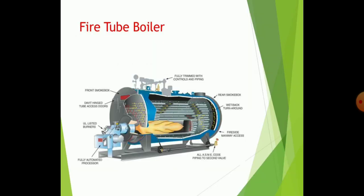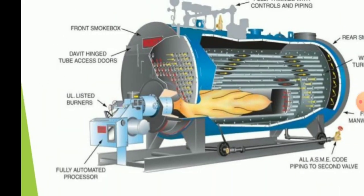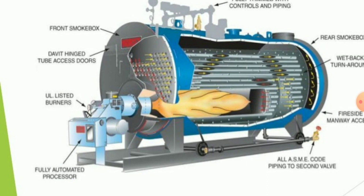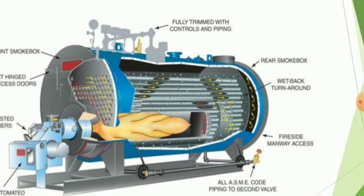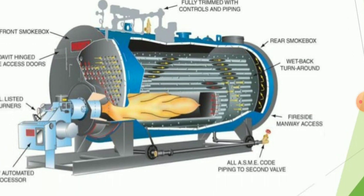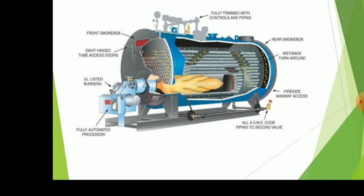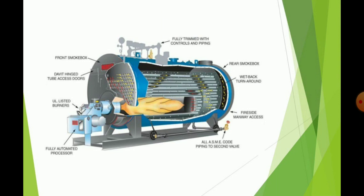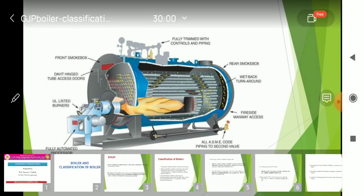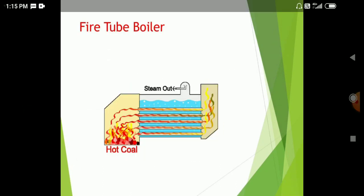The cut section of the fire tube boiler is shown on screen. The arrangement shows the shell, front smoke box, high tube access doors, and a fully automatic processor at that point. A rear smoke box and wet back turn arrangement are also present. This type of boiler represents the actual working condition for industrial and high steam requirement applications.